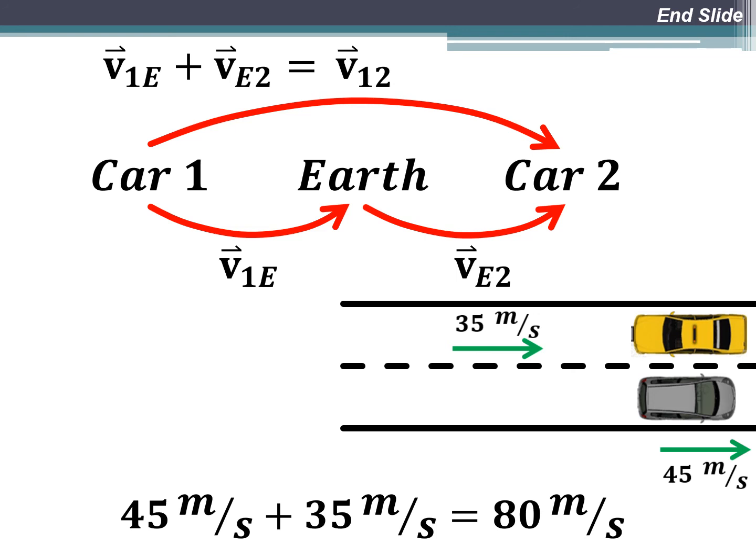If two cars are going in the same direction, you would subtract the two velocities — you would add the negative, adding the opposite vector. So the relative velocity would be less than either car's individual speed.